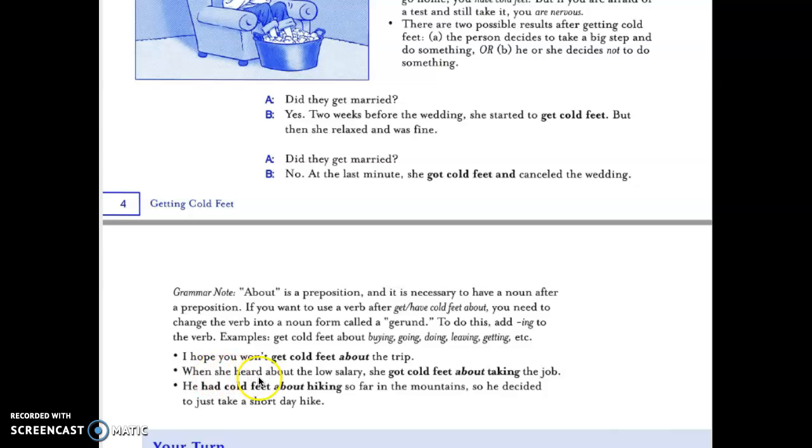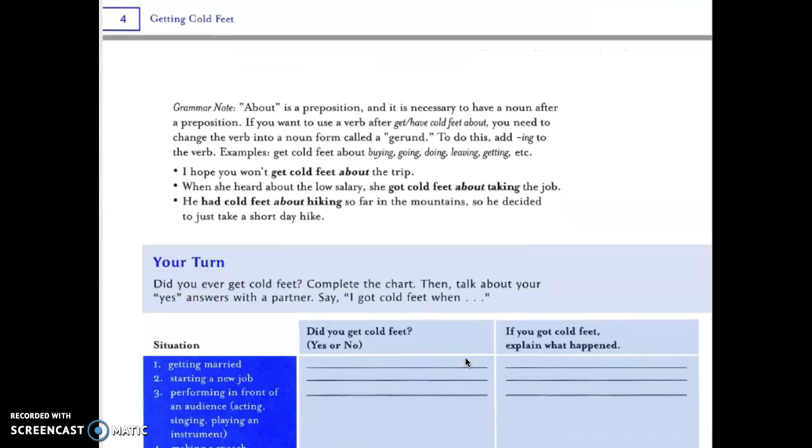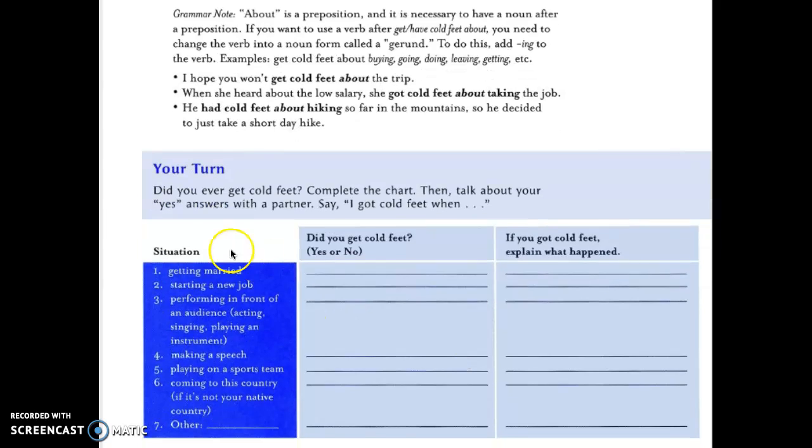When she heard about the low salary, she got cold feet about taking the job. He had cold feet about hiking so far in the mountain, so he decided to just take a short day hike. About: preposition plus a verb plus -ing. So we know that this expression will use a gerund, that means -ing form. Did you ever get cold feet?